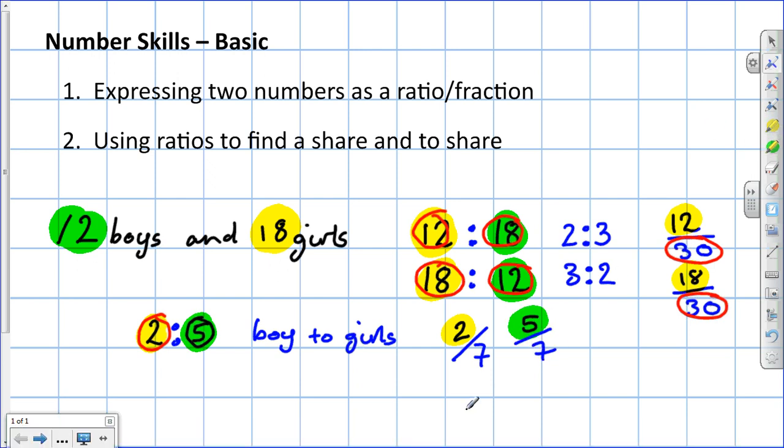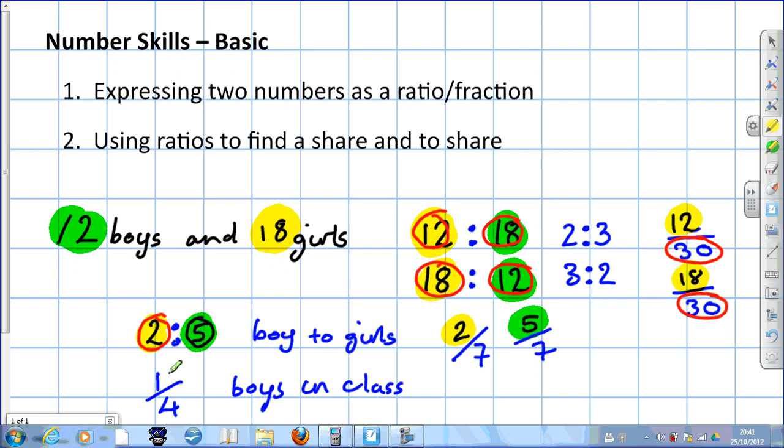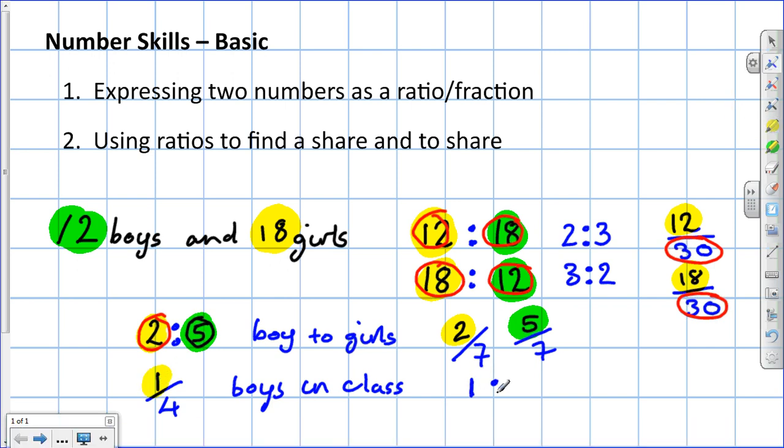So what about the other way around? What if we know the fraction and want to turn that into a ratio? Let's say the fraction of a class that are boys was a quarter. How do we turn that to a ratio? The first number, as we saw, is no problem.